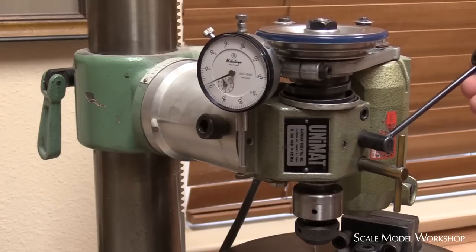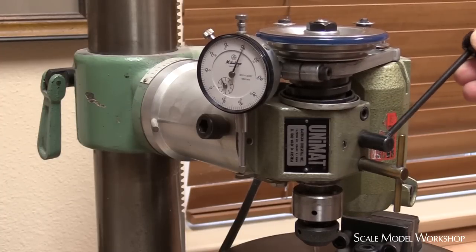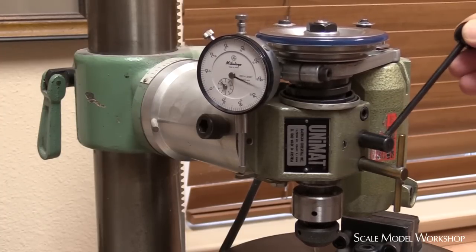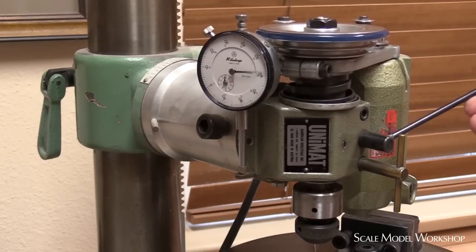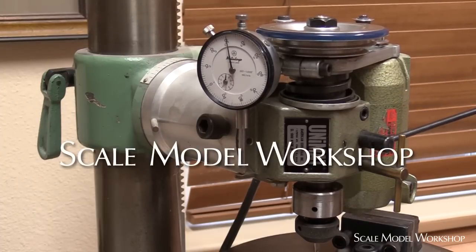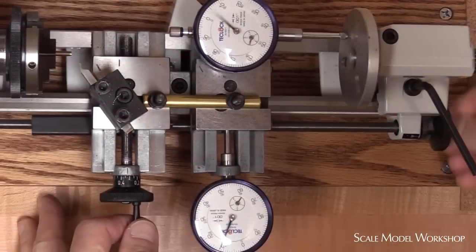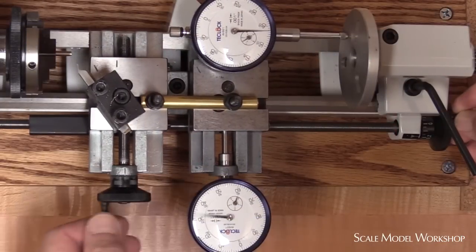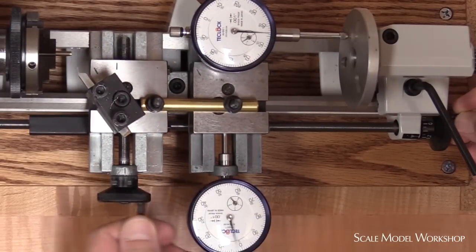Sometimes these modifications can be pretty simple, like adding a dial indicator to this Unimat SL head that I use for a mill. Welcome to Scale Model Workshop. In this video, I want to share how I added the functionality of Direct Readout to my miniature lathe.